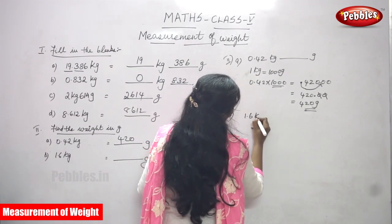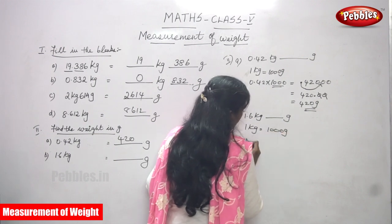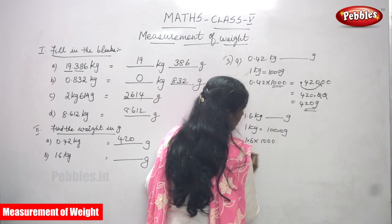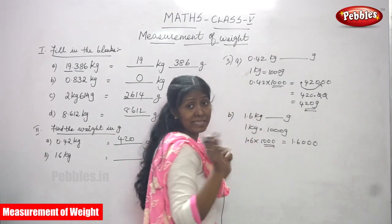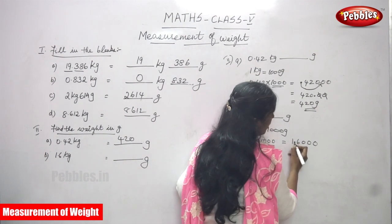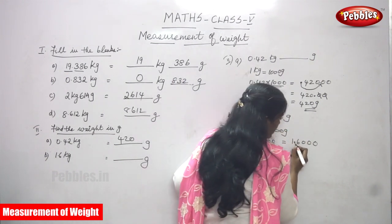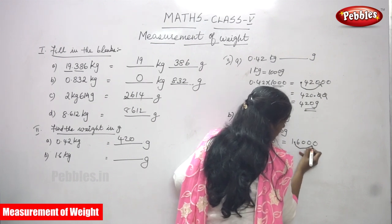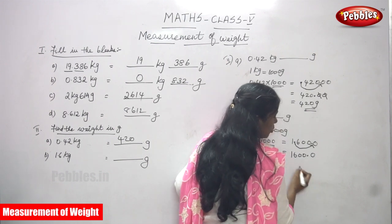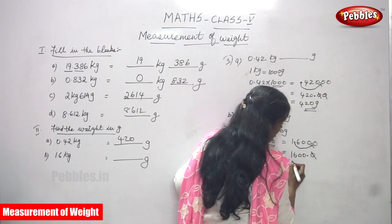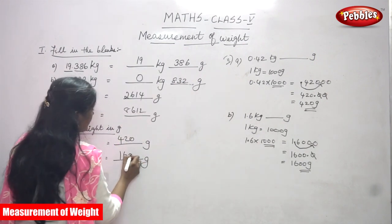Second sum: 1.6 kilogram — convert into gram. One kilogram equals 1000 gram, so 1.6 multiplied by 1000: write 1.6 and move the decimal point three places to the right. One, two, three — giving 1600. Cancel the trailing zeros after the decimal. The answer is 1600 gram — one thousand six hundred gram.